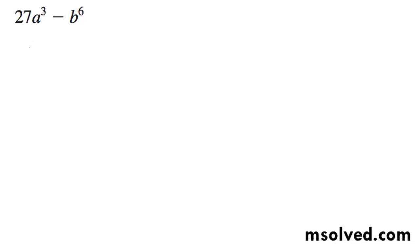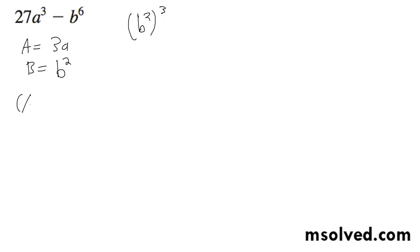We have the difference of cubes, which in this case we can represent as a equals 3a and b equals b squared. We can rewrite b to the 6th as b squared raised to the 3rd. This gives us the form a minus b, quantity a squared plus ab plus b squared.